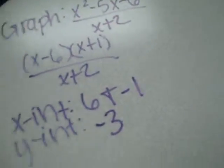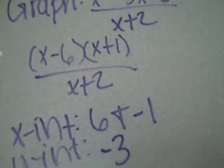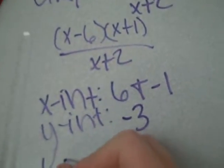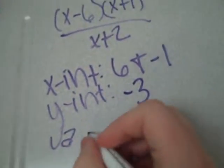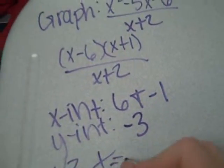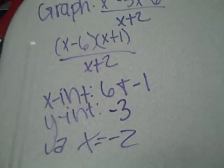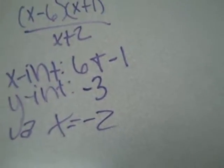And then after that you would find the vertical asymptote and that would be x equals negative 2, because the denominator is x plus 2 so it cannot equal negative 2.